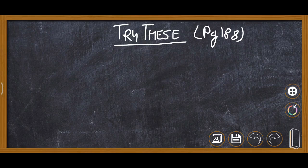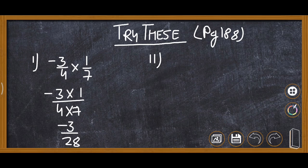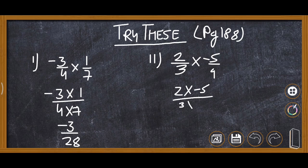The second Try These on page 188 also involves multiplication. First: -3/4 × 1/7. Multiplying -3 by 1 gives -3, and 4×7 = 28, so the answer is -3/28. Second: 2/3 × -5/9. Multiplying 2 by -5 gives -10, and 3×9 = 27, so the answer is -10/27.